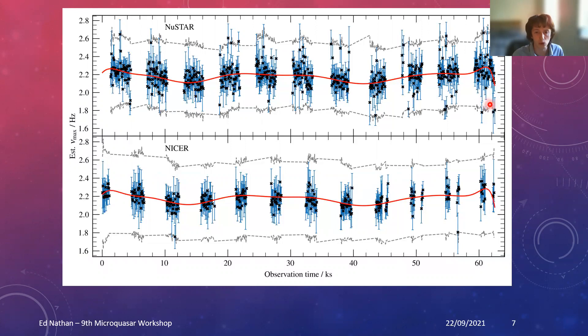The first thing we've got to do is track how the QPO frequency varies during the observation, because it does slightly. We'll split up the observation into lots of short time segments and map out where we think the QPO is at what frequency. We do this independently from NICER and NuSTAR, then use a basic polynomial smoothing fit so we can nail down where the frequency is at different times. Then we can correct that given it does drift by a small amount.